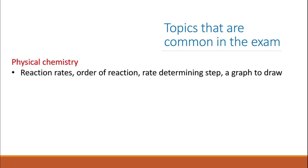Starting with physical chemistry, there is always a question about reaction rate. When they ask about reaction rate, they ask about the order of the reaction. It's quite common that they give you a table with the concentration and the change in concentration of different reactants and the initial rate of the reaction. Also, the rate determining step — how to decide which step is the rate determining step with justification. It's also very common to ask you to draw a graph related to reaction rate, showing the change in concentration of a reactant or product over time.